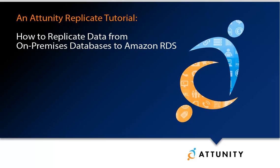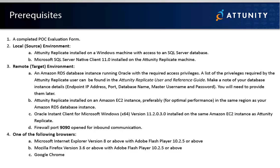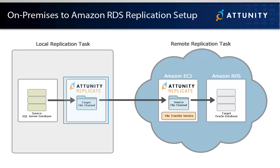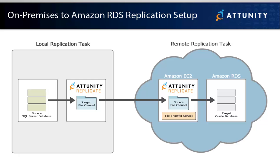If you want to use a different database, make sure that you have the appropriate database client installed. Before starting the tutorial, please pause the video and take a few moments to review the prerequisites. To replicate from an on-premises database to Amazon RDS, you need to define a local replication task and a remote replication task. The local task will replicate data from your SQL Server to the Attunity Replicate file channel, while the remote task will replicate data from the file channel to your Oracle database on Amazon RDS.